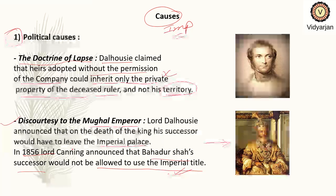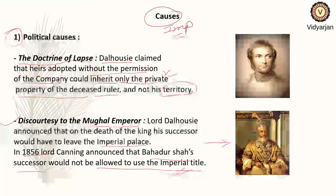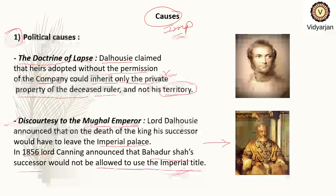People were very angry with these policies — the Doctrine of Lapse and the discourtesy to the Mughal emperor. Though the Mughal emperor was not so powerful by then, people still regarded India's rulers. So if an Indian ruler was treated badly, obviously the people would get angry. This was the second political cause.